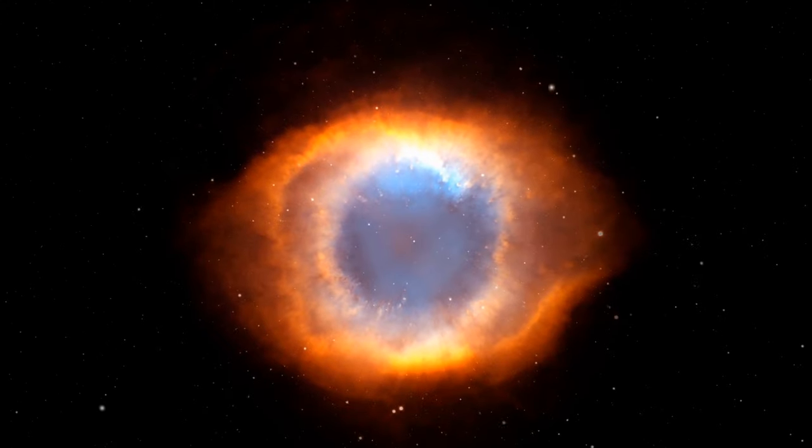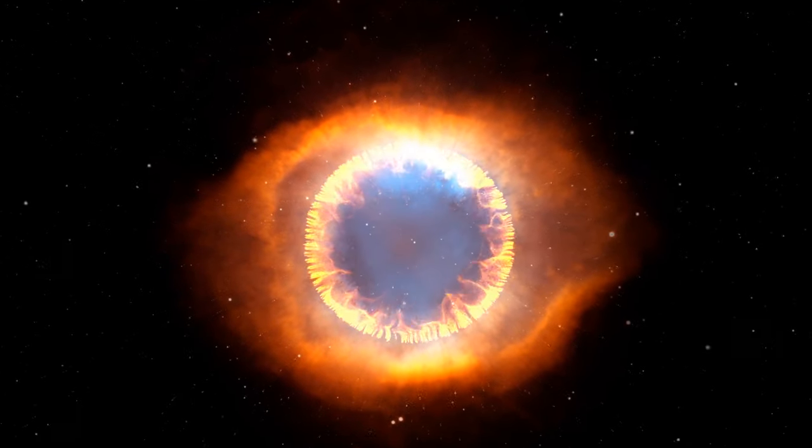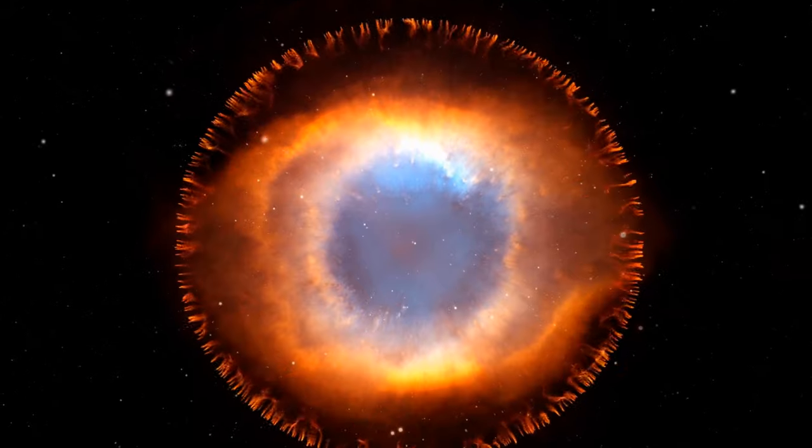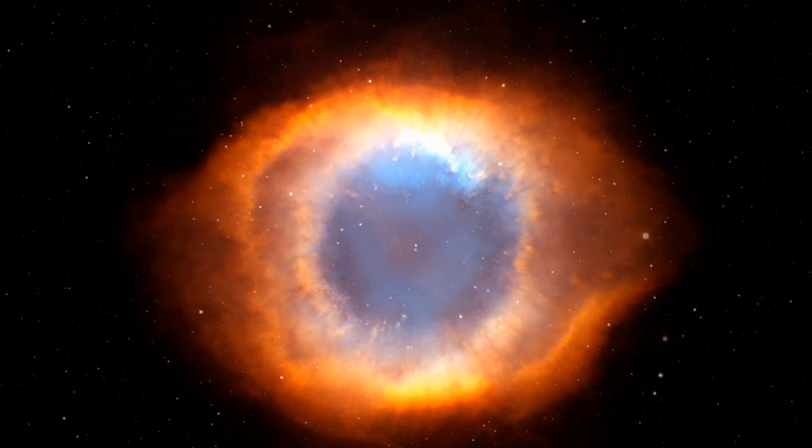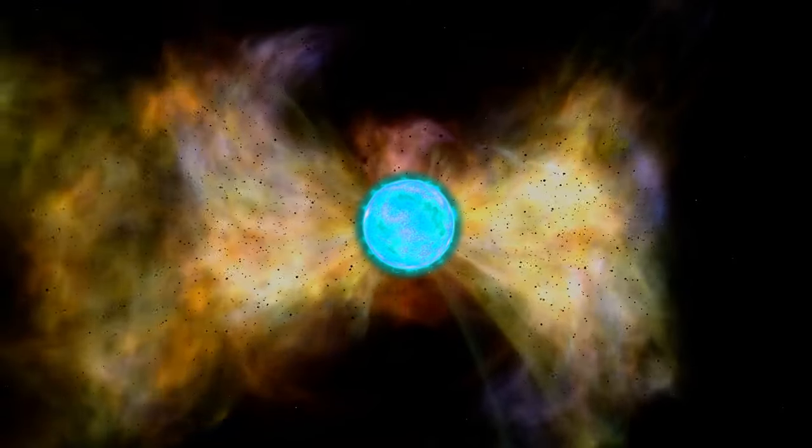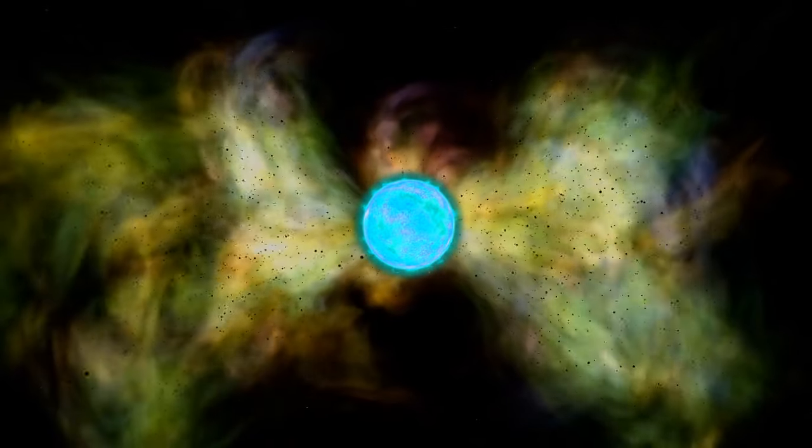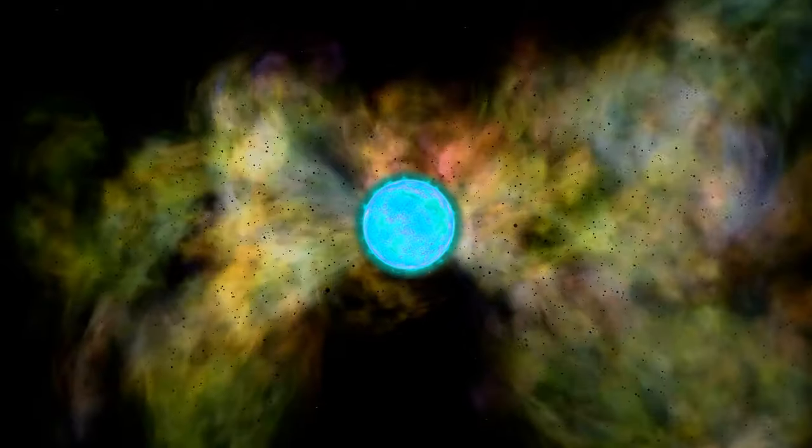When the blast of a supernova interacts with the surrounding interstellar gas, it creates a magnetized region called a shock. Particles move into this shock, bouncing around the magnetic field and getting accelerated. After that, they get released into space.